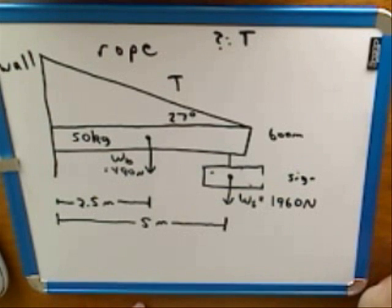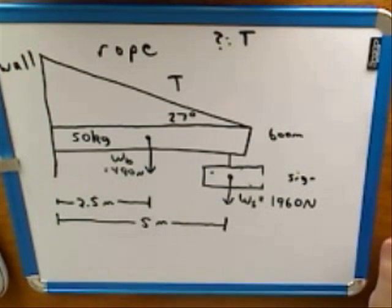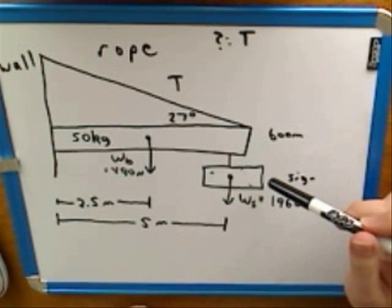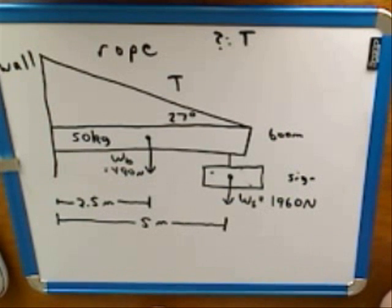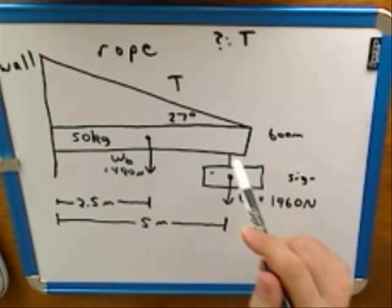Any other external forces besides those two weights? To clarify: we don't want to ignore the wall and the rope — we just treat them as external to the object, not as the object itself. We don't worry about forces that one part of the object exerts on the other, because those are internal. We only want forces from external sources, like the Earth exerting the weight forces — that's definitely external to the combined object.